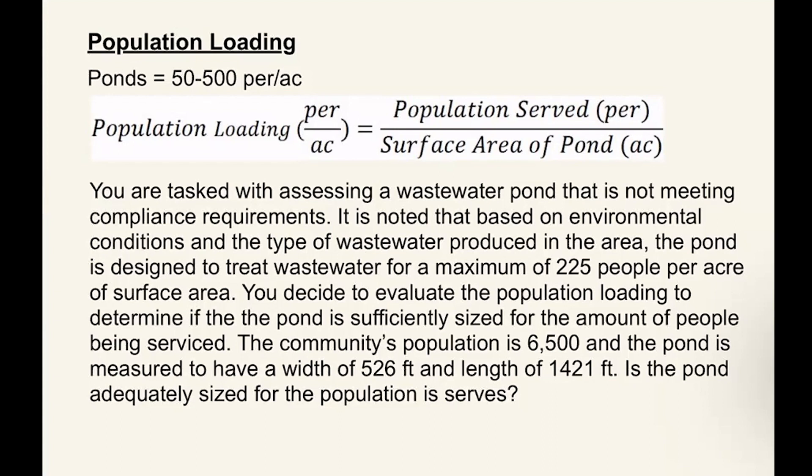Let's jump right into the question. You are tasked with assessing a wastewater pond that is not meeting compliance requirements. It is noted that based on environmental conditions and the type of wastewater produced in the area, the pond is designed to treat wastewater for a maximum of 225 people per acre of surface area. You decide to evaluate the population loading to determine if the pond is sufficiently sized for the amount of people being serviced. The community's population is 6,500 and the pond is measured to have a width of 526 feet and a length of 1,421 feet. Is the pond adequately sized for the population being served?